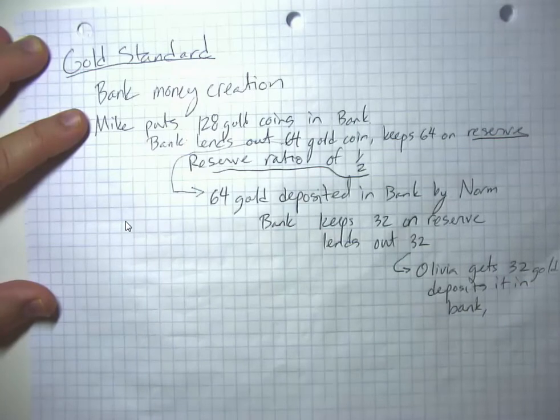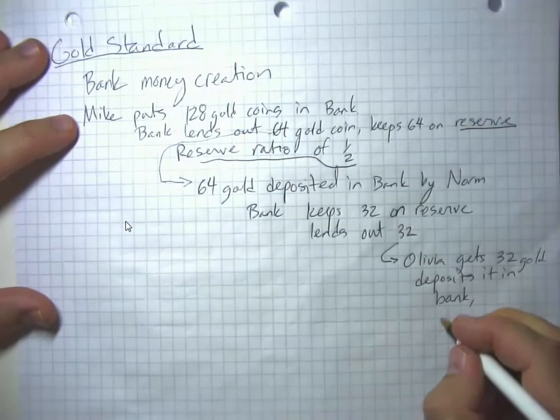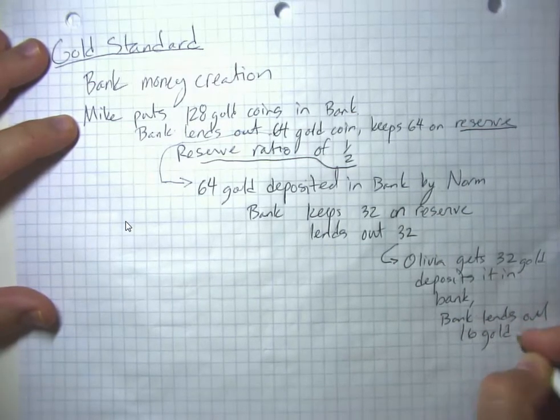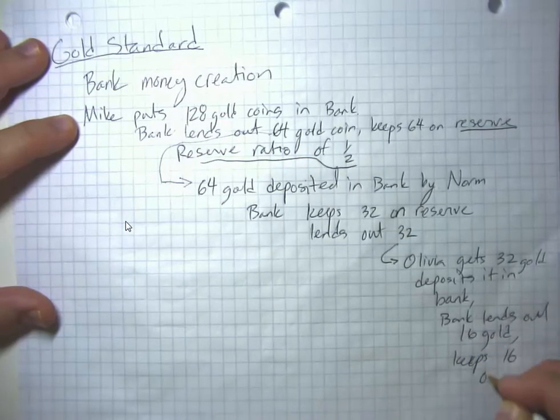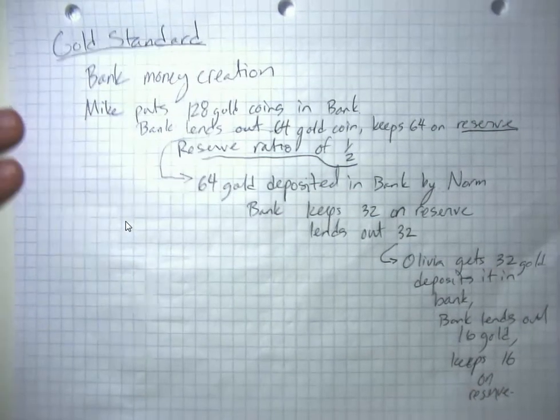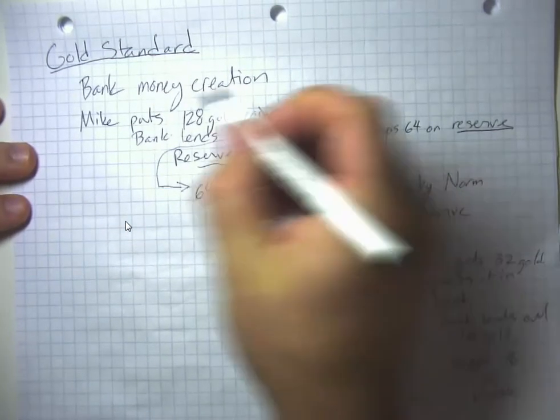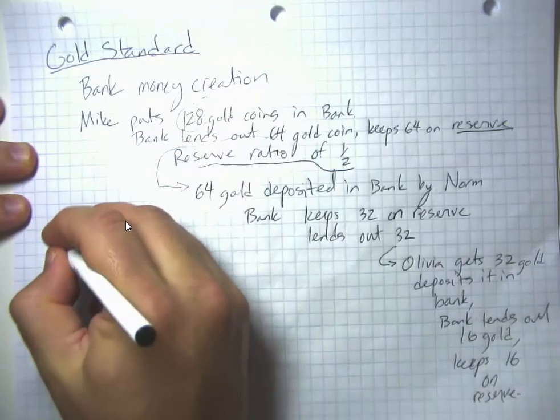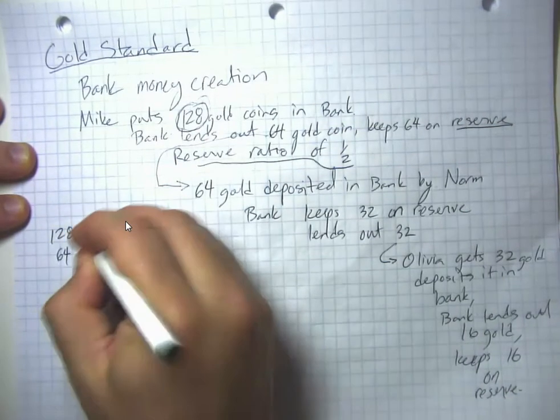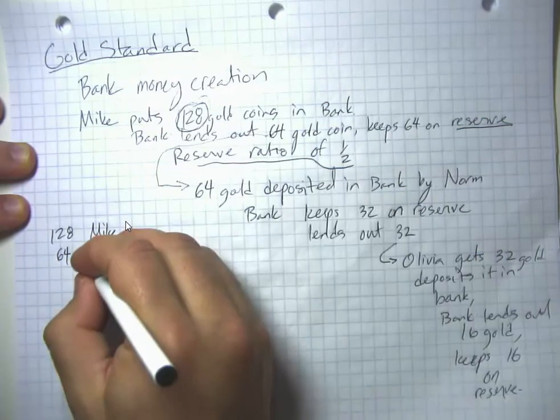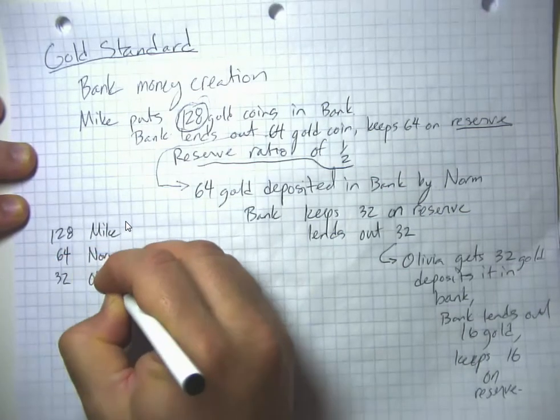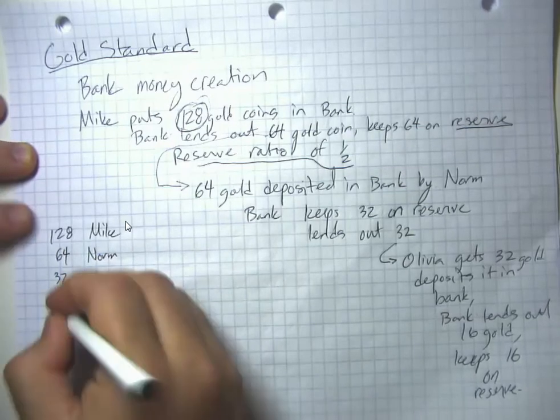Now she has $32 in her checking account, and the bank lends out 16 and keeps 16 on reserve. You can imagine this going on for quite some time. If you look at the amount that people have in their checking accounts, I have $128 in my checking account, Norm has 64 in his checking account, and Olivia has 32 in her checking account.